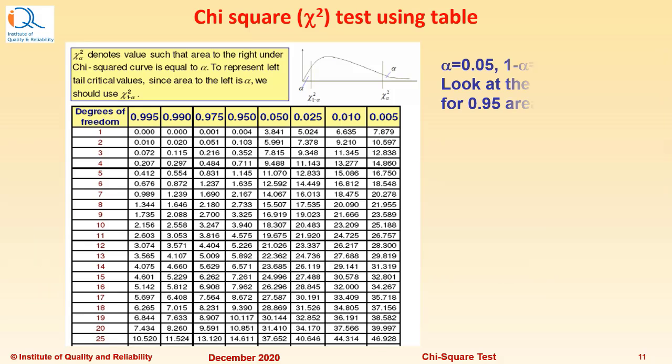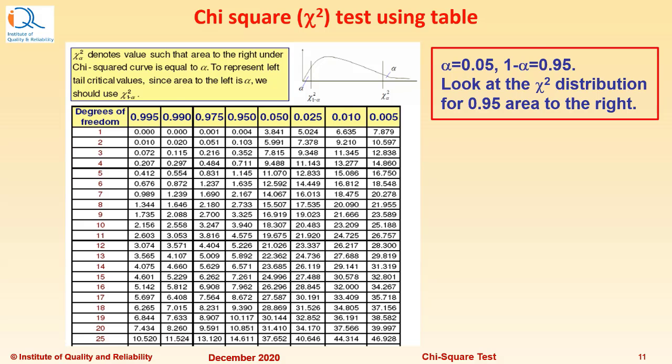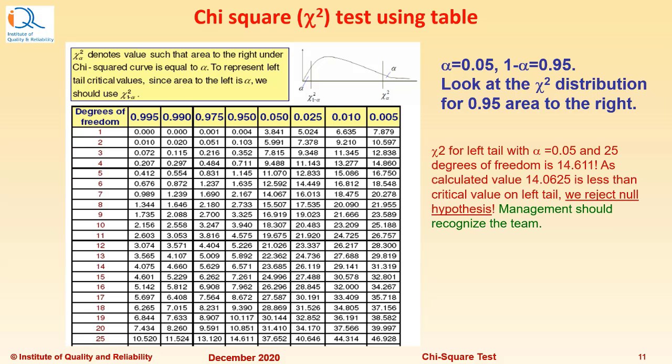Now, we refer to the Chi-Square distribution table and for α = 0.05, 1 minus Alpha would be 0.95. Therefore, we look at Chi-Square distribution for 0.95 area to the right. Chi-Square for left tail with α = 0.05 and 25 degrees of freedom is 14.611.